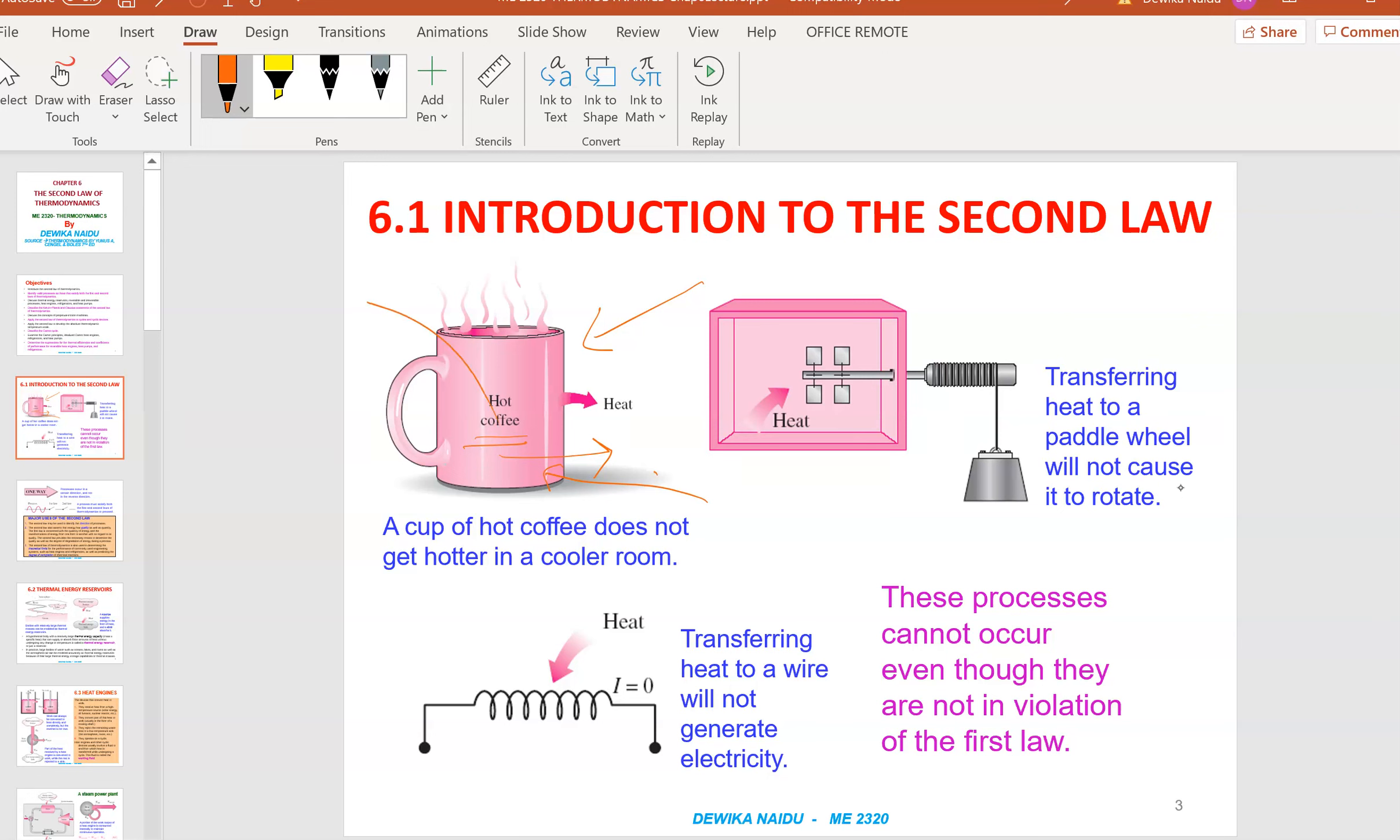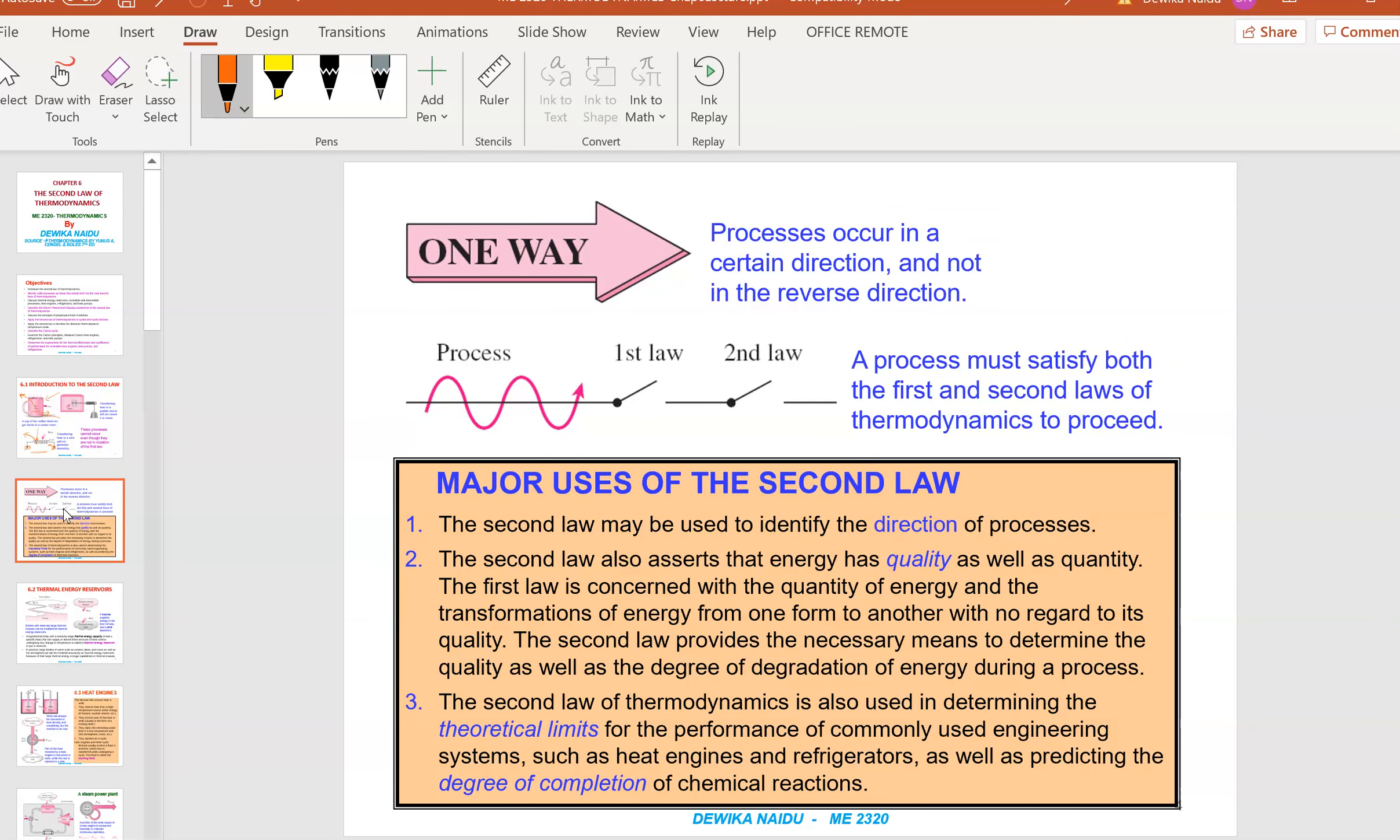This shows the second law of thermodynamics, which shows that energy has a certain specific direction. Likewise, look at this wire. If you connect it to a battery, the wire produces heat. But if we disconnect the battery and introduce heat to the wire, will it generate electricity? Of course not. That's what I'm trying to say—the second law says energy goes in a certain way. It says that it goes in one way. A process occurs in a certain direction and not in the reverse direction. A process must satisfy both the first and the second law of thermodynamics to proceed.